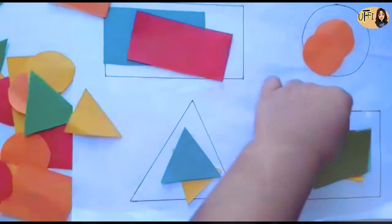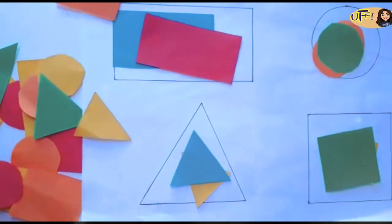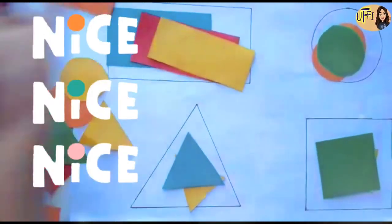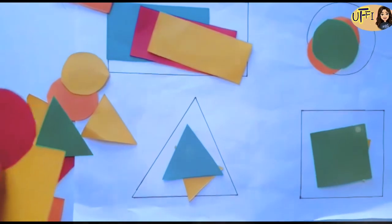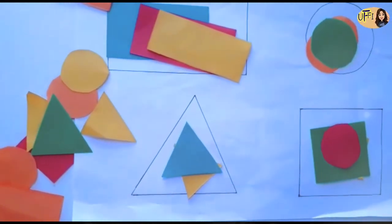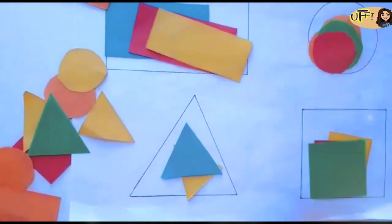A triangle. And a square. A circle. A circle. And a circle. No. That's wrong. That's a circle. Put it in a circle shape.